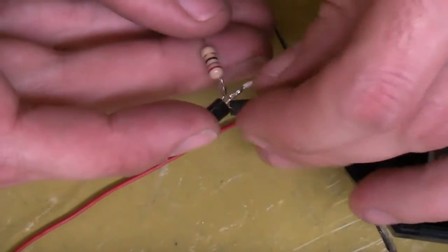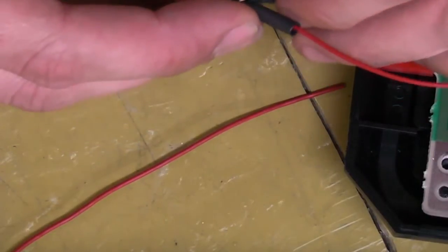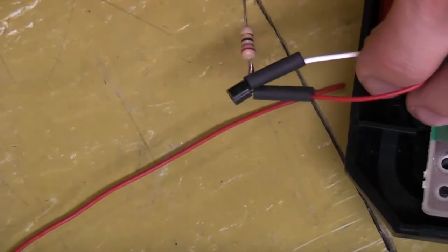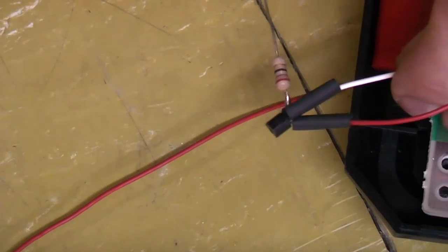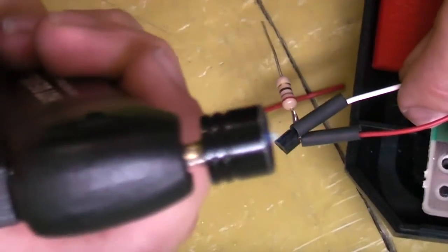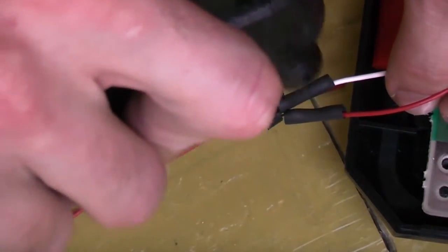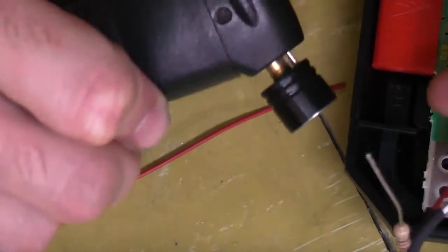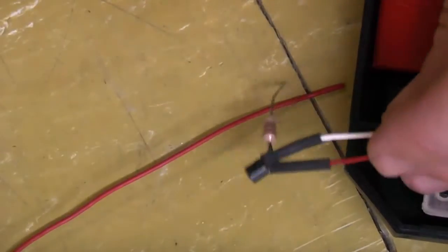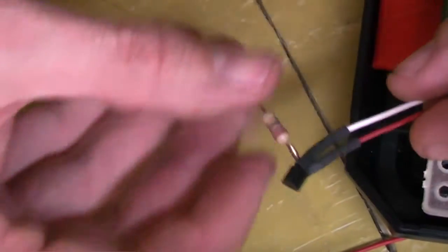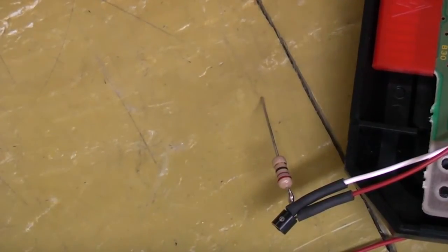And then all we do is just slip our heat shrink back up into place. And you can actually use the soldering iron if you want to carefully melt that down. I however happen to have a butane torch, so I'm just going to very gently heat it with one of these.